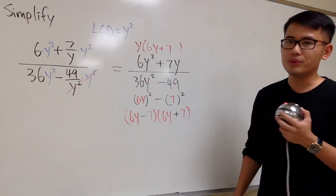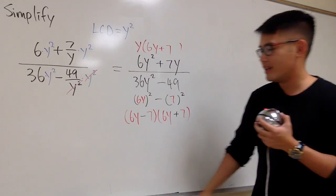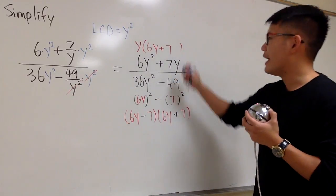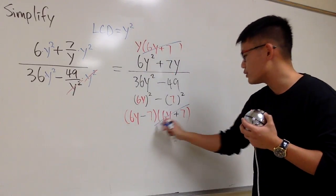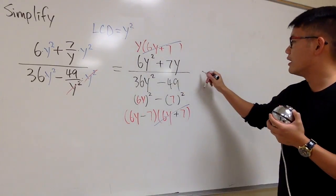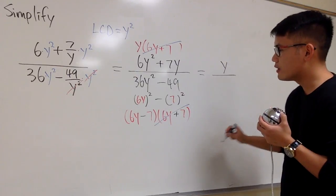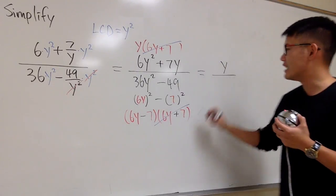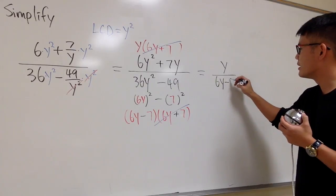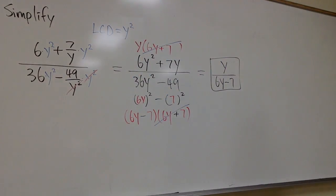And now, what can we do? You see that? This and that are identical. They are exactly the same. And we can cancel these two factors out. At the very end, the only thing that we have left is y on the top over 6y minus 7 on the bottom. And this right here is it. Let's go.